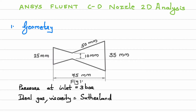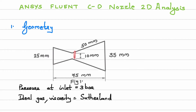This portion of the nozzle is the converging part, at the center we have the throat, and this is the diverging part. The given data: at inlet the dimension is 25 mm, at throat it is 10 mm, and at exit it is 35 mm. The inclined line dimension is 50 mm and the total length is 75 mm. At the end there will be a Q&A session where doubts related to the ANSYS Fluent part will be addressed one by one.